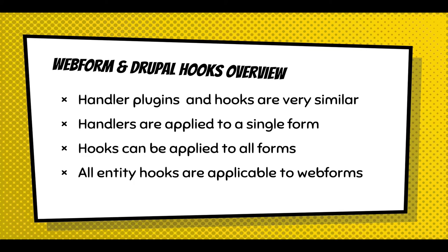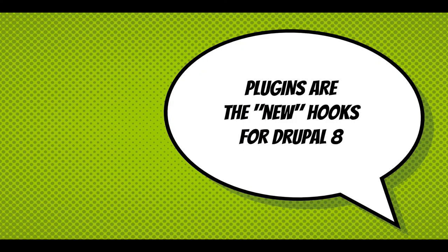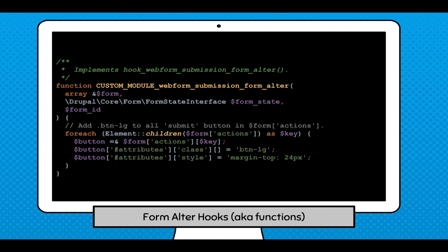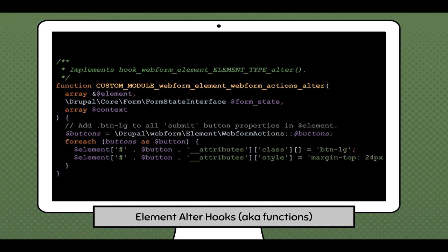An example is a form alter hook altering a webform submission — this demo changes the way the buttons look, making them bigger, for every form. That's an applicable use of a hook. There's also a hook altering element types, doing the exact same thing as a form alter but using a slightly different hook. Both are legitimate ways to do it. Some hooks available include form alter, element hooks, options, entity hooks, altering libraries, access rules, and more.